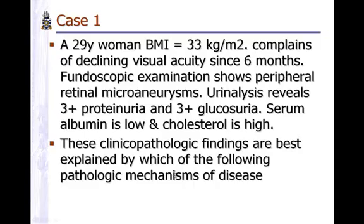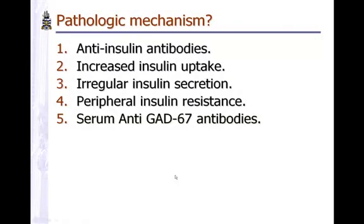Anti-insulin antibodies would have been Type 1, occurring in very young patients. Or if in an adult, it would have presented quickly — that's LADA. Increased insulin uptake is not a known condition. It is a typical case of Type 2 diabetes, so the answer is peripheral insulin resistance.